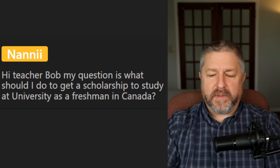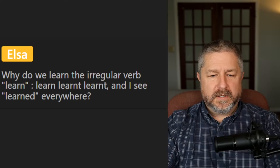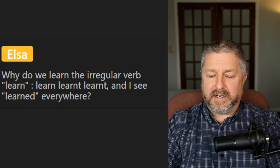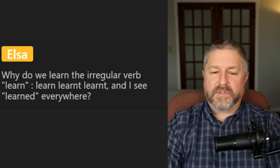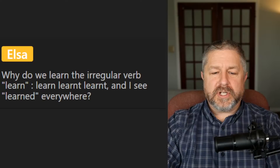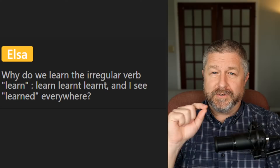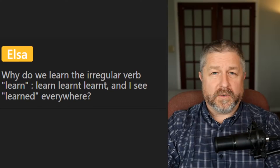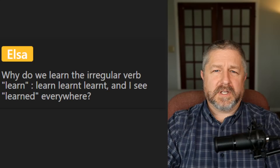From Elsa: why do we learn the irregular verb 'learn' as learn-learnt-learnt? Learned and learnt is a regional thing. In Canada and the United States, 'learned' (with the D) is generally accepted as the correct spelling. In the UK, 'learnt' is generally accepted as the correct spelling. That's why there is a difference — a British spelling versus a North American spelling. I don't use 'learnt'; I would say 'he learned that in school.'